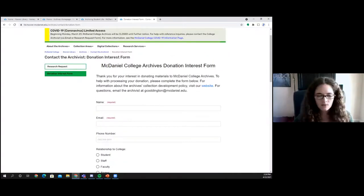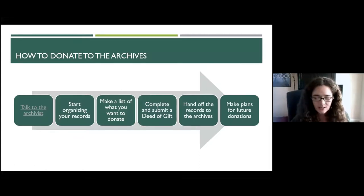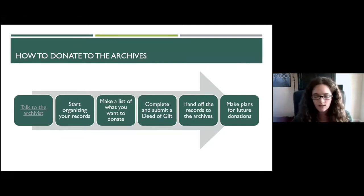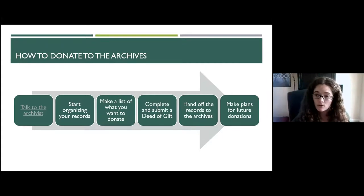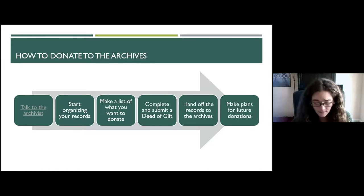After you've talked to me, the next part of the process is to start organizing your records — think about what you want to donate and make copies if needed. Then make a list of the items you intend to donate. That's really helpful for me; it speeds up the organizing and processing and makes your items available faster.